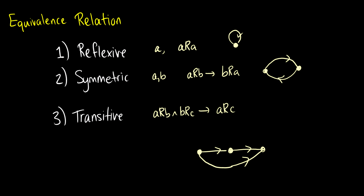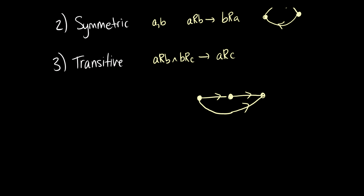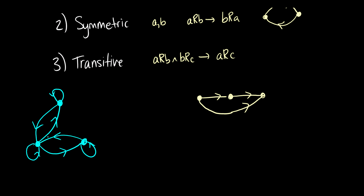So when we put the three together, let's say we have three elements. They all have to be related to themselves, so we get some nice reflexive arrows. And let's say that a is going to be related to b and b related to c. If we have an arrow pointing from one node to another, by symmetry we have to get arrows pointing back. And by transitivity, because a points to b and b points to c, then we should get an arrow from a to c. And by symmetry, we get an arrow back. So we get this super loop crazy thing.